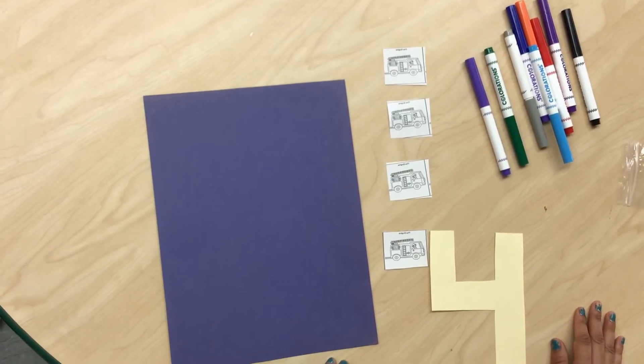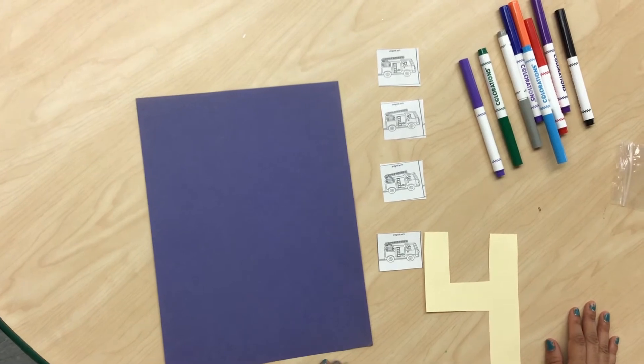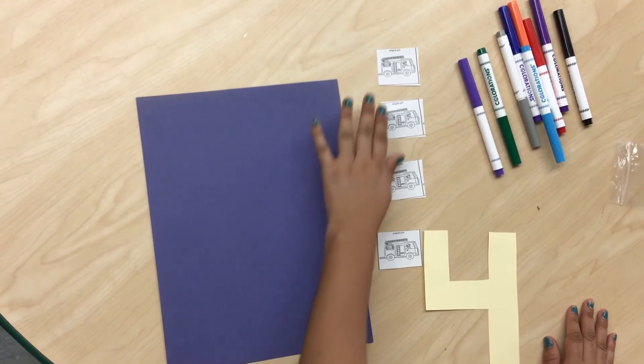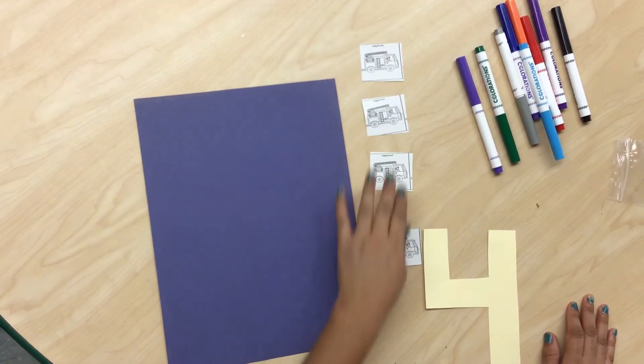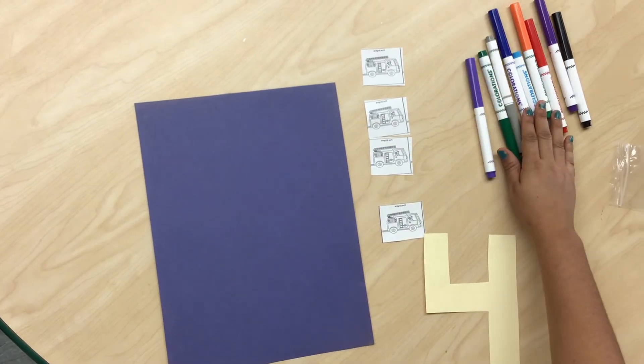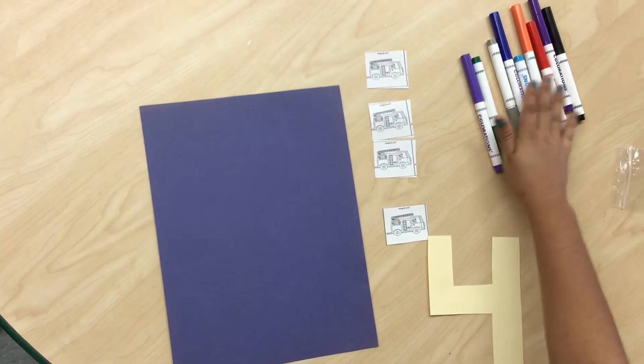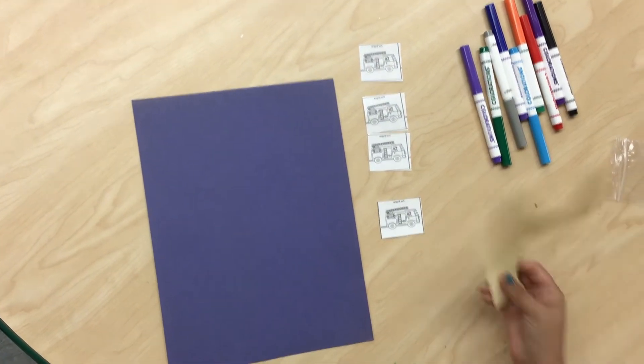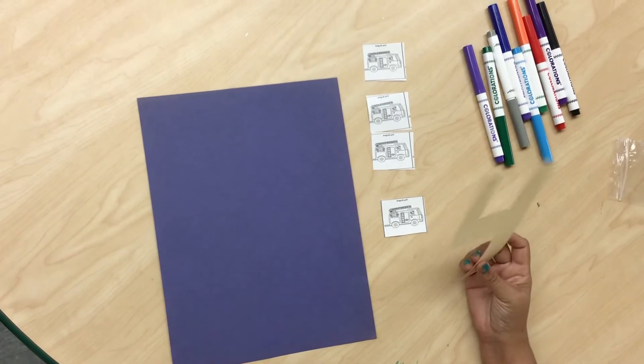The materials that we are going to use to create this project are construction paper, four fire truck images, crayons or markers, and a number four pattern.